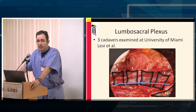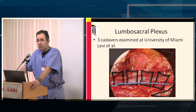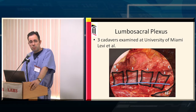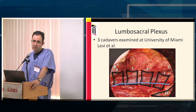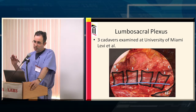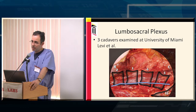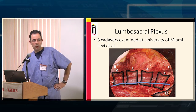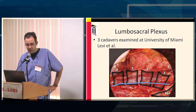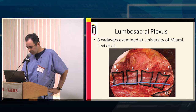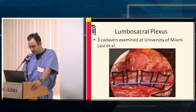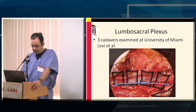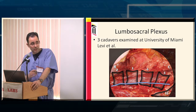At our institution, in order to reduce the incidence of palsy, we actually put electrodes into all four heads of the quadriceps. This will catch more of the nuances of retraction than if one were to randomly put an electrode into just one head of the quadriceps. That is one technical way to catch more of these retraction injuries. Levy et al. examined the lumbosacral plexus in cadavers and came up with a good schematic to look at the positioning of the lumbosacral plexus with respect to the disc base.